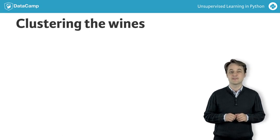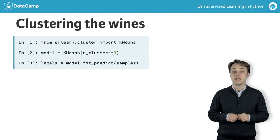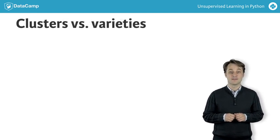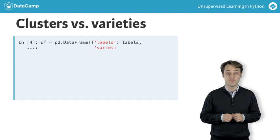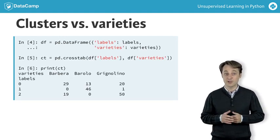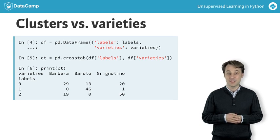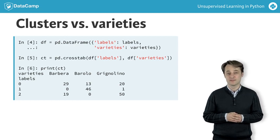Let's take the array of samples and use K-means to find three clusters. There are three varieties of wine, so let's use Pandas cross tab to check the cluster label to wine variety correspondence. As you can see, this time things haven't worked out so well — the K-means clusters don't correspond well with the wine varieties.